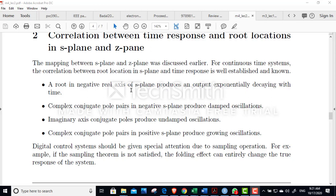A root in negative real axis of the S plane produces an output exponentially decaying with time. A complex conjugate pole pair in the negative S plane produces damped oscillation. Imaginary axis conjugate poles produce undamped oscillation. Complex conjugate pole pair in the positive S plane produces growing oscillation.